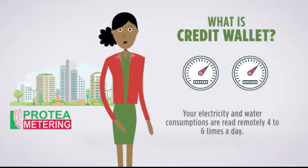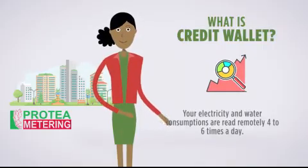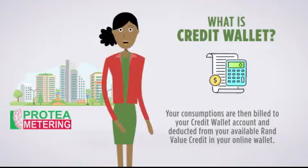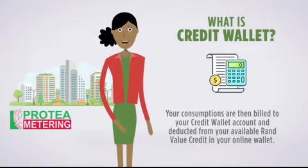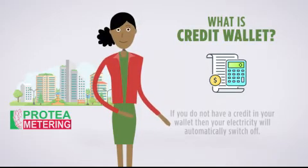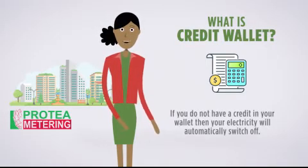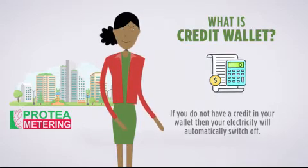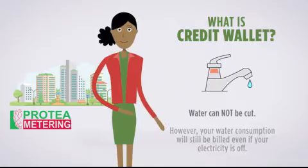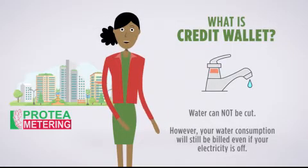Your electricity and water consumptions are read remotely four to six times a day. Your consumptions are then billed to your Credit Wallet account and deducted from your available RAND value credit in your online wallet. If you do not have credit in your wallet, your electricity will automatically switch off. Water cannot be cut; however, your water consumption will still be billed even if your electricity is off.